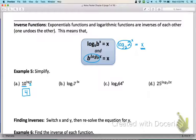For b, I have the log base 7 of 7 to the negative 3x power. So everything is undone and we're just left with negative 3x.